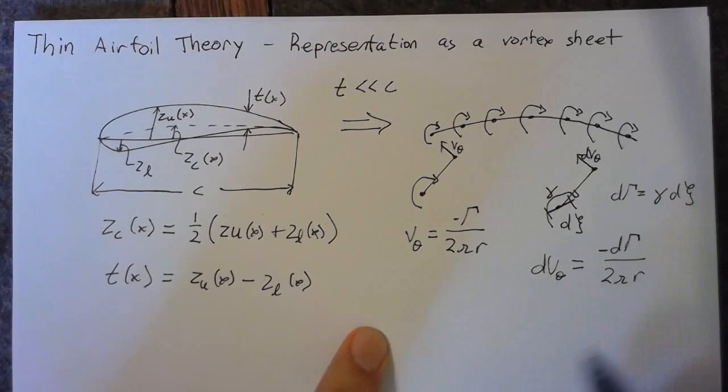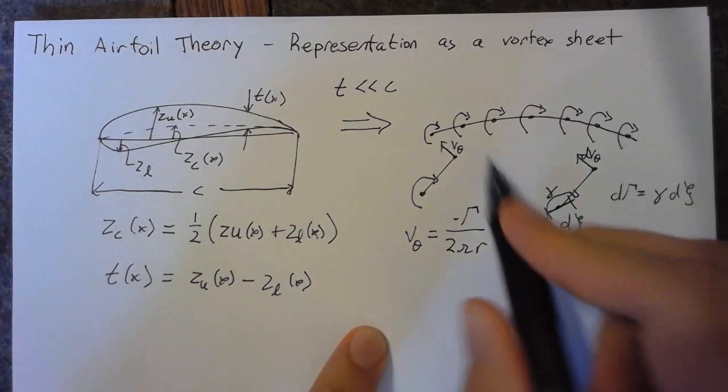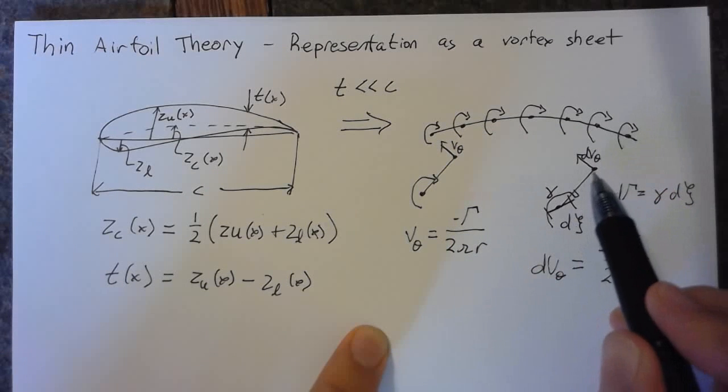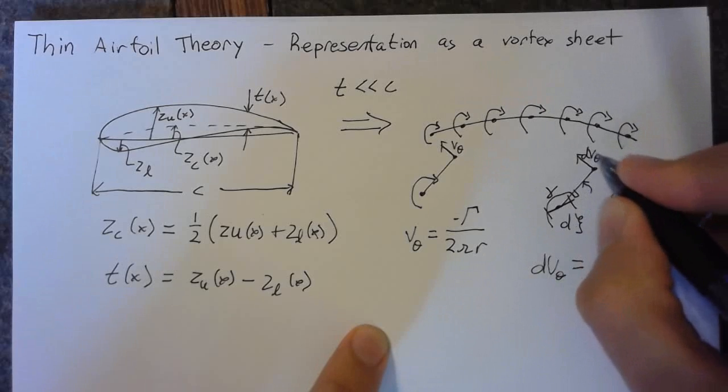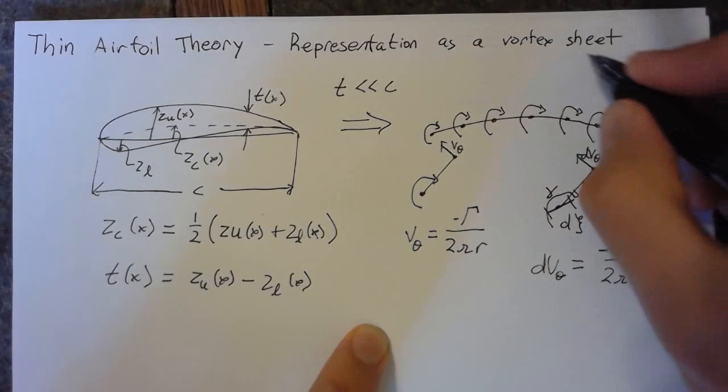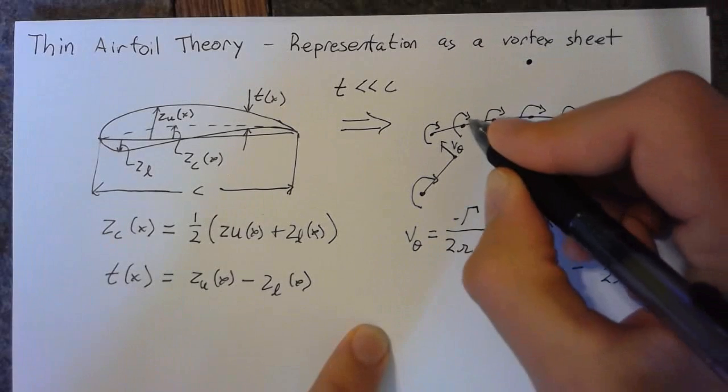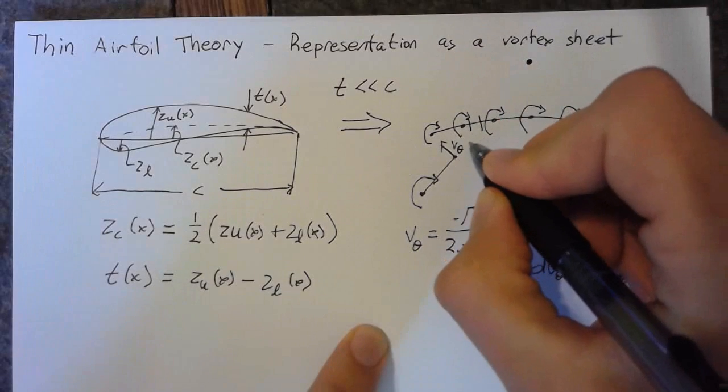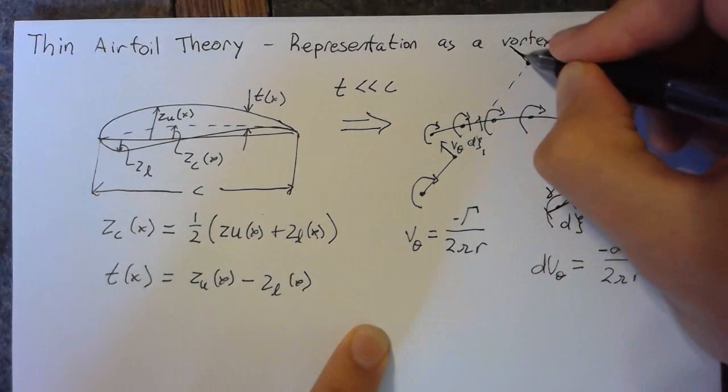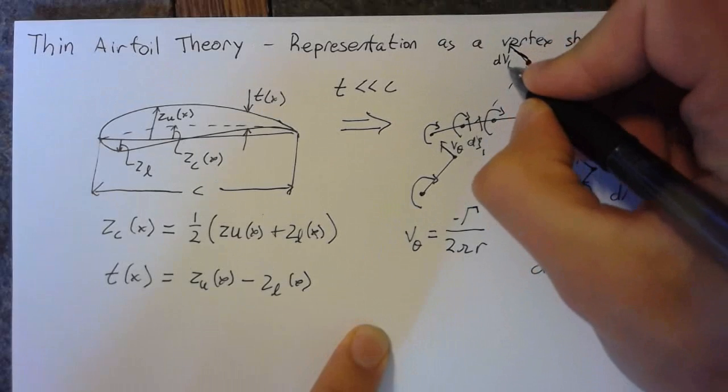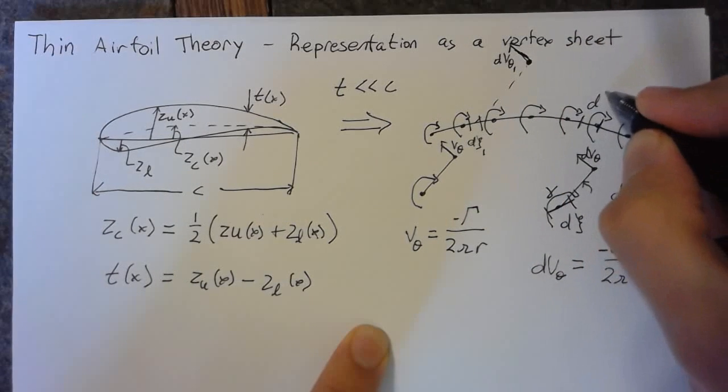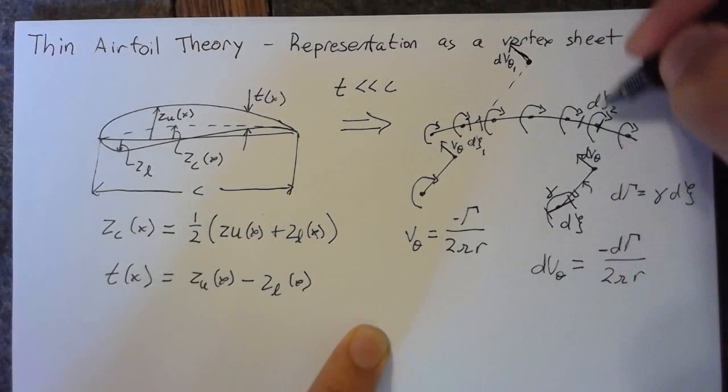Now, the tricky part comes in that for every piece of this vortex sheet, the theta is going to be different, which means that our representation of d v theta is going to be different. So for instance, if we're looking at some point up here, if we call this d xi 1, then it's going to cause a d v theta in this direction. Now, if we have some other part of this, then again we can draw a line.